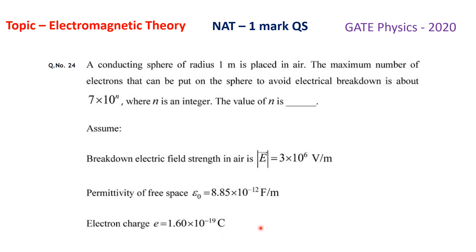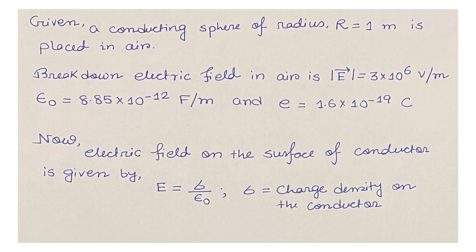Let us see how to solve this problem. It is given that a conducting sphere of radius R = 1 meter is placed in air. The breakdown electric field in air is |E| = 3 × 10⁶ volt per meter, and the permittivity in vacuum ε₀ = 8.85 × 10⁻¹² farad per meter.